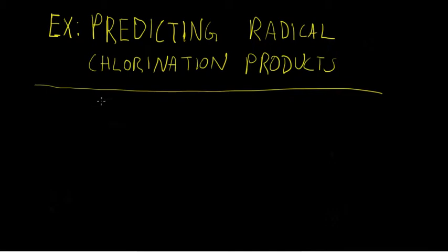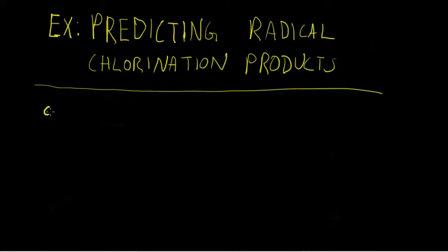We're going to work another example involving predicting radical halogenation products. In this case, we're going to look at monochlorination products specifically. Remember that chlorination, while selective, still results in some abstraction of primary hydrogens. So keep that in mind when we work these problems.